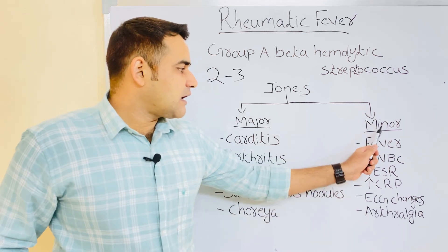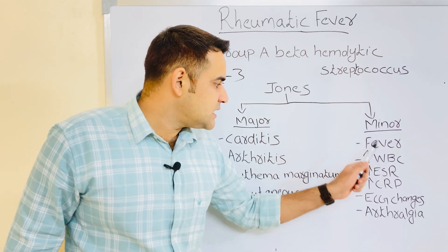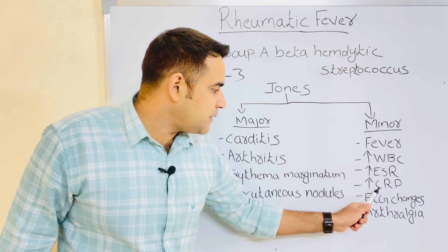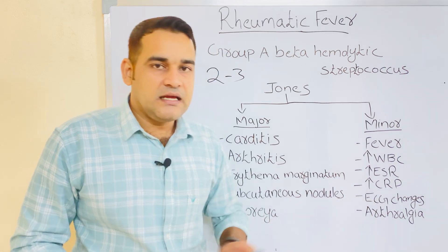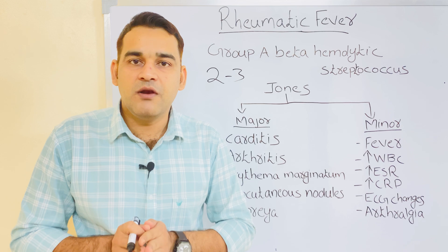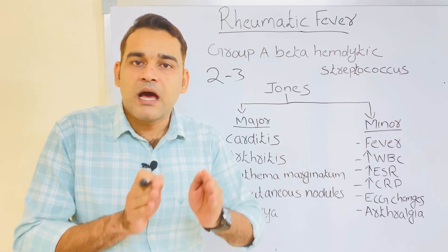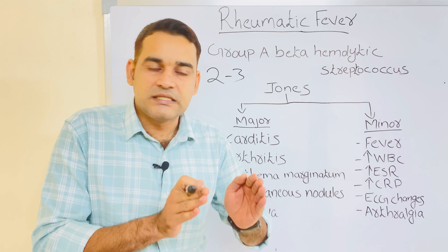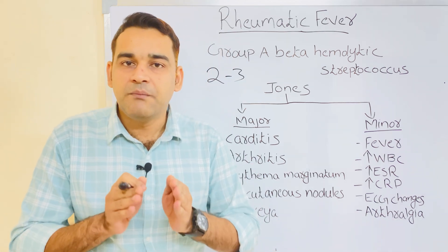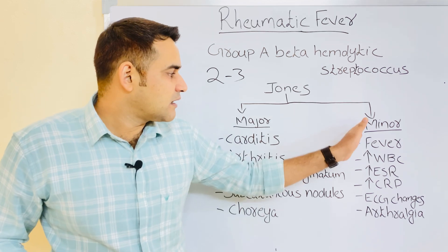Regarding the minor criteria: fever, increased WBC, increased ESR, increased CRP, and ECG changes where the PR wave will be prolonged. Also arthralgia, meaning joint pain, is seen in the minor criteria.